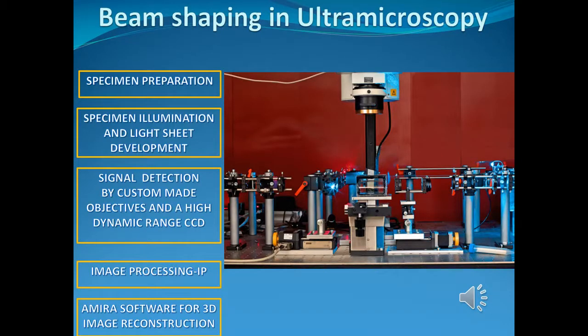Here in this slide, you see the principle of ultramicroscopy. First, it is specimen preparation done by our biologists in our group. Then it is the illumination part, which you see in the image here. After all the signals are detected through the camera and the objective, we have a stack of images that goes through image processing using AMIRA software.